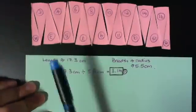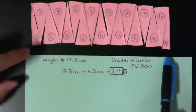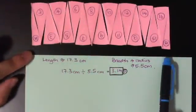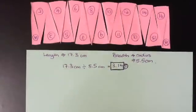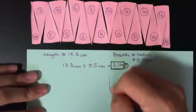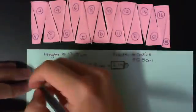The length here will be 3.14 times of the radius, or the breadth here. So let's try to find first the circumference of the circle.